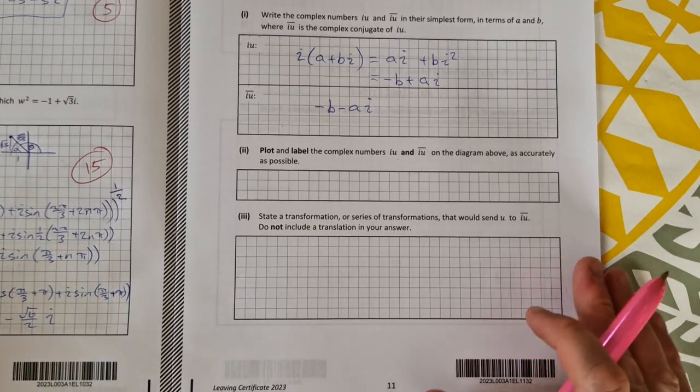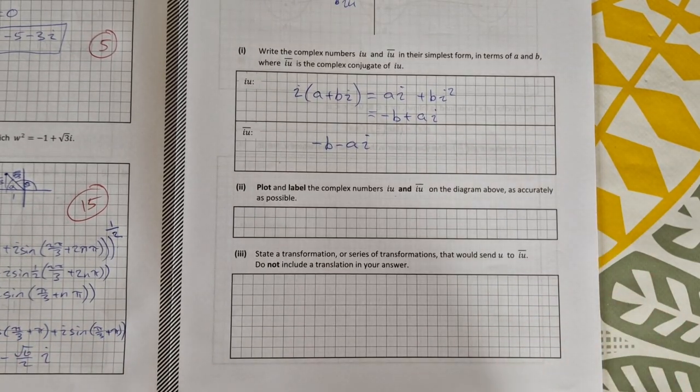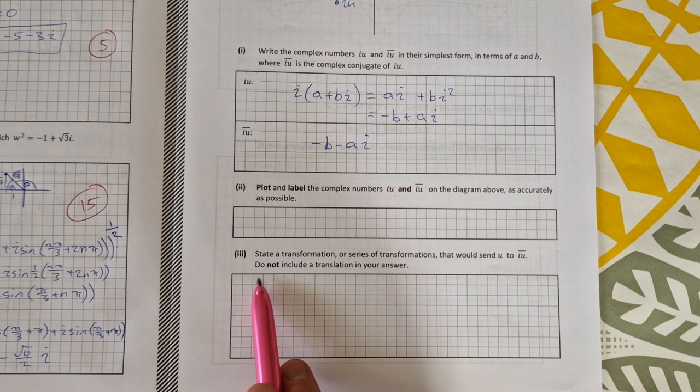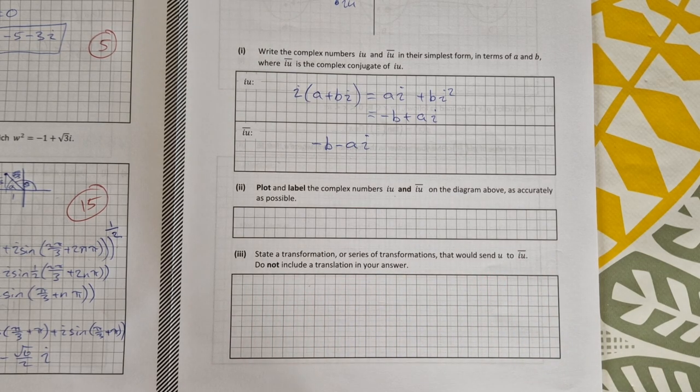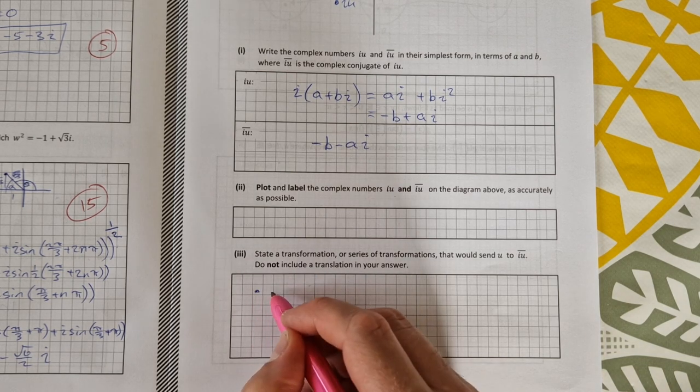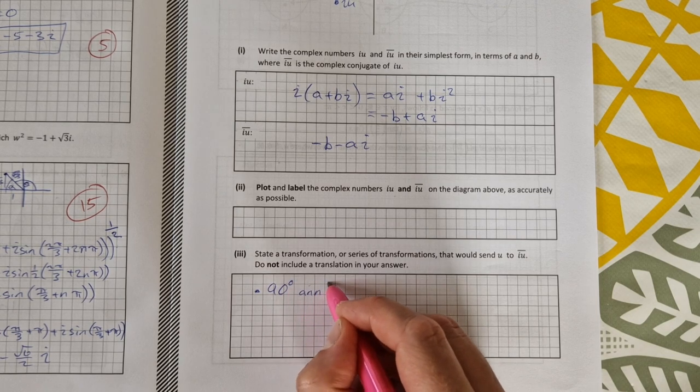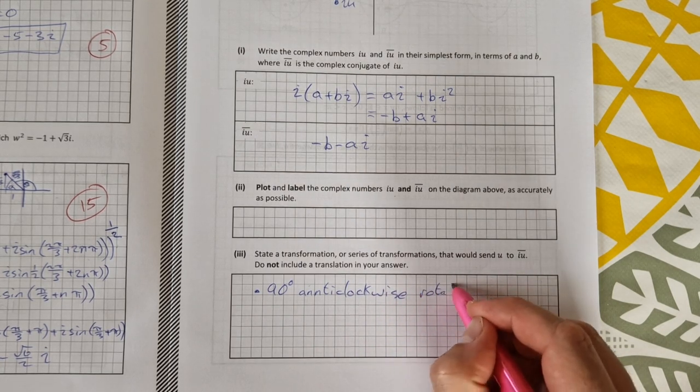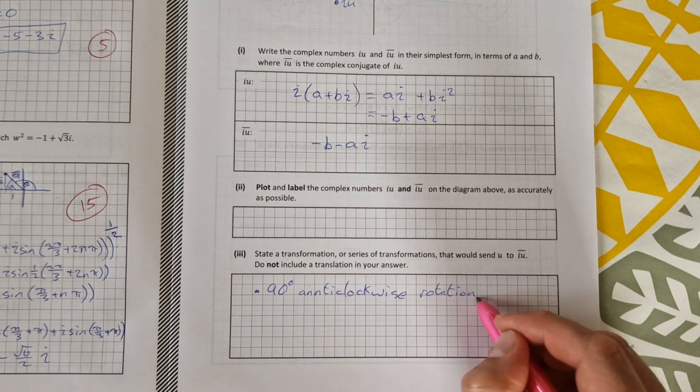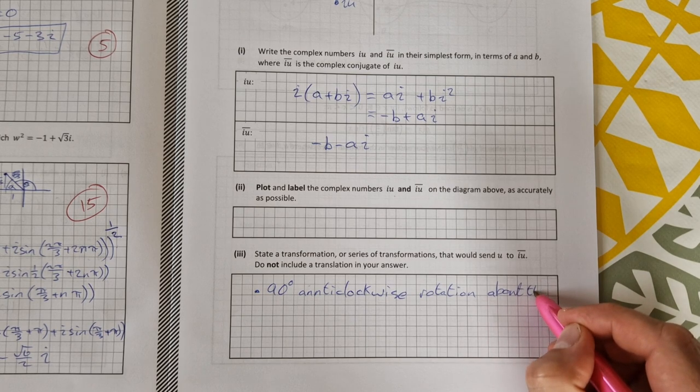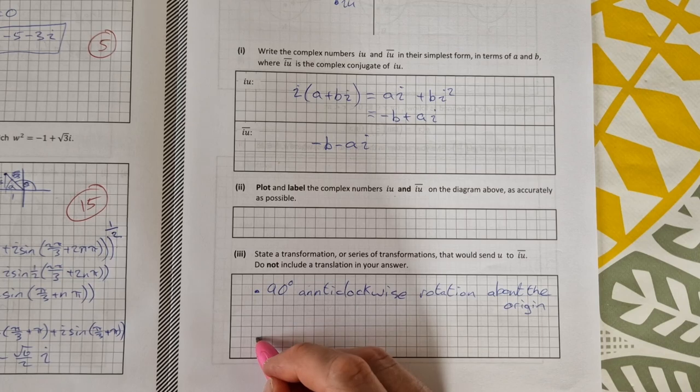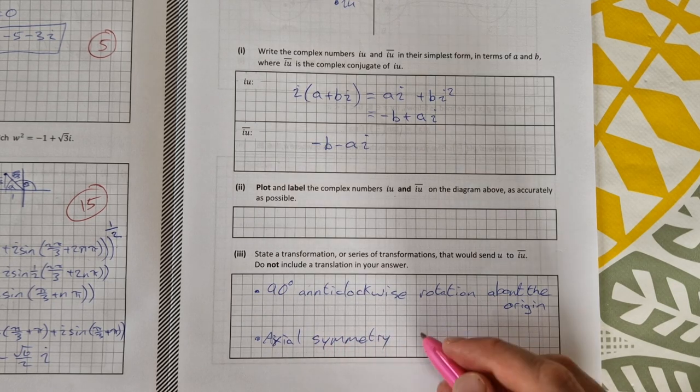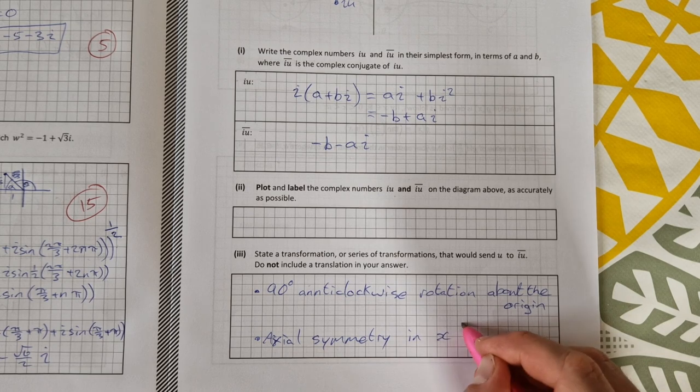And that is actually the question for part three: to state what those transformations are. State a transformation or series of transformations that would send u to iu bar. Do not include a translation in your answer. So first thing is to do a 90 degree anticlockwise rotation, a rotation about the origin. And then you could do axial symmetry, axial symmetry in the x-axis, or you could say in the real axis.